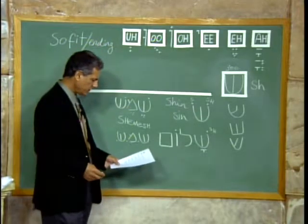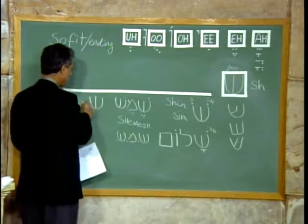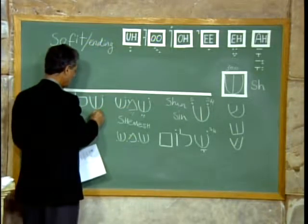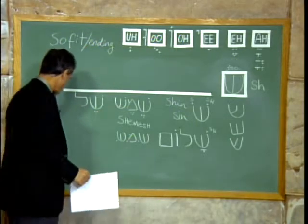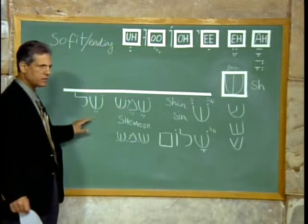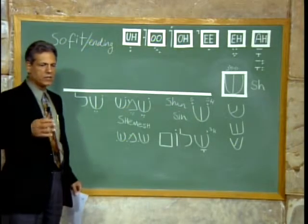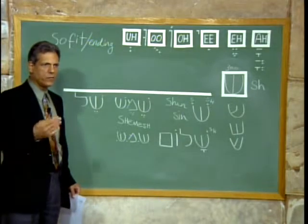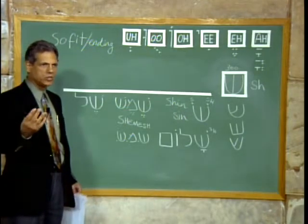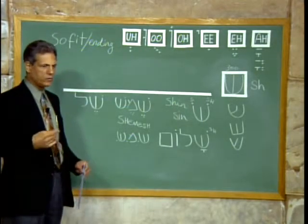Another word is Shin and a Lamed. Shin with an A sound is She, and a Lamed gives us Shel. Shel is the word for belonging in Hebrew, and you can conjugate it in many ways: mine, yours, theirs. Sheli, Shelcha, Shelanu — all those words come from Shel. So it's a word of belonging, of possession.